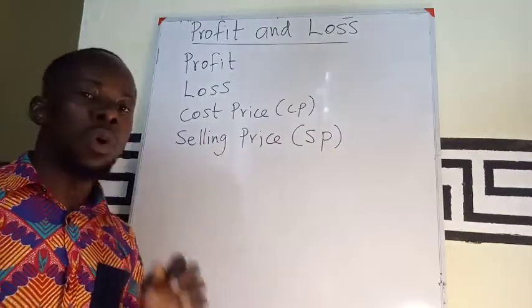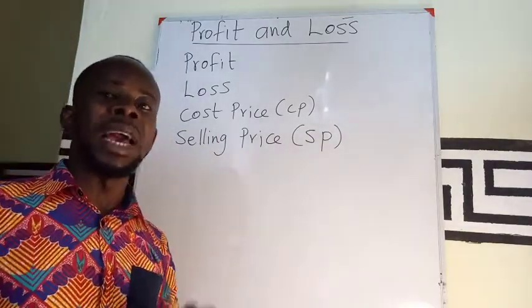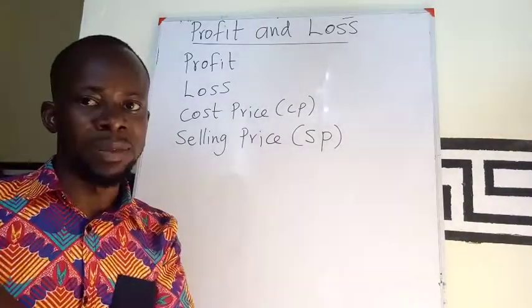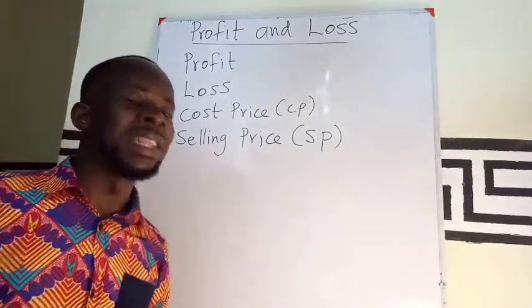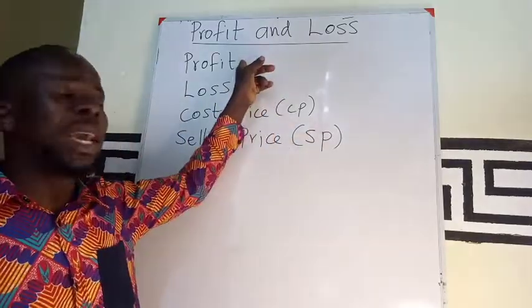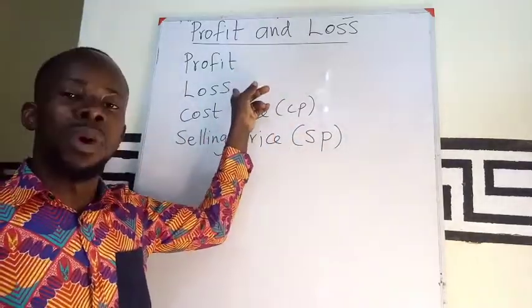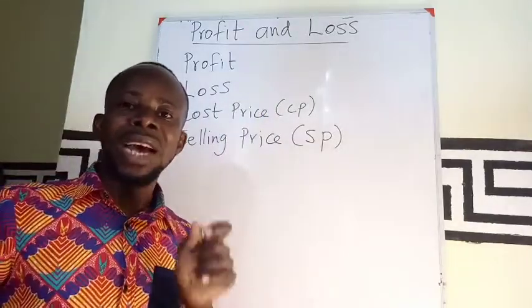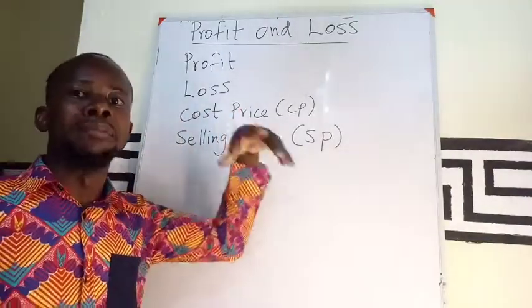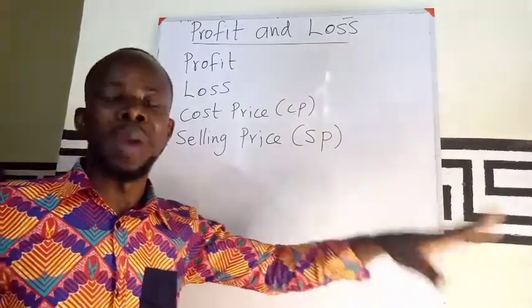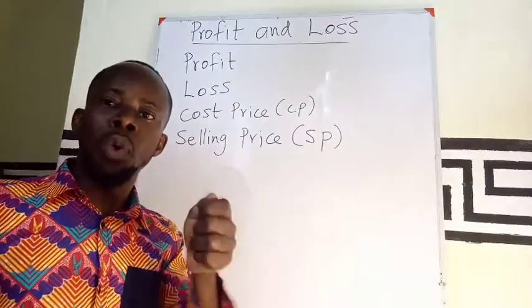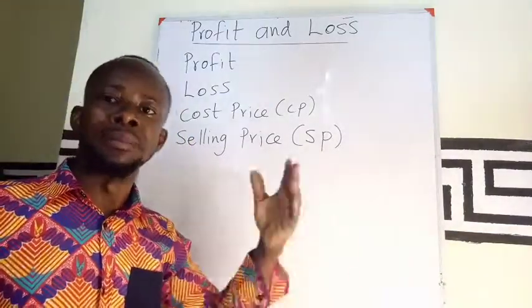Now we also have the term cost price. It means that if I buy an article at a certain price and sell it at a different price, those prices being different means that either I am making a profit or a loss. The price at which an article is purchased is what we call the cost price, or the marked price. For example, if I go to the market to buy a pen and I pay 5 Ghana cedis, that is the cost price.